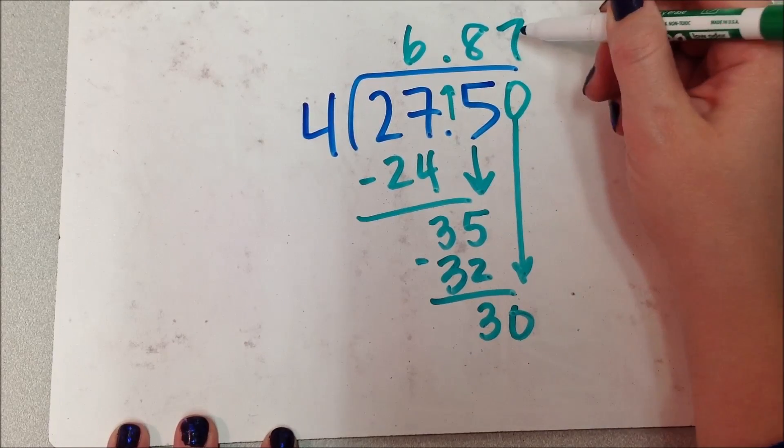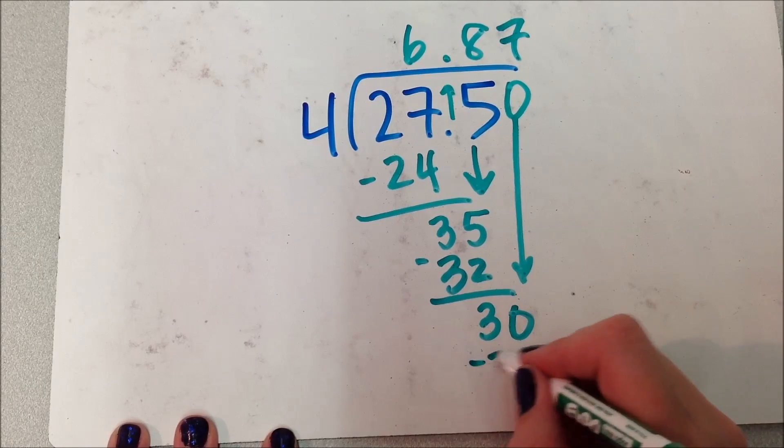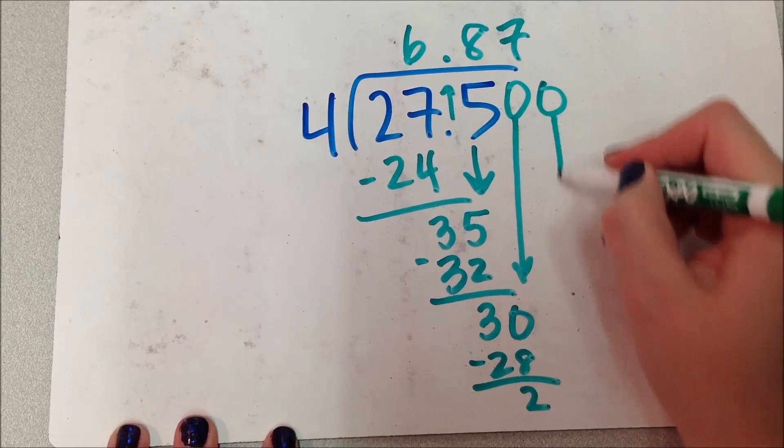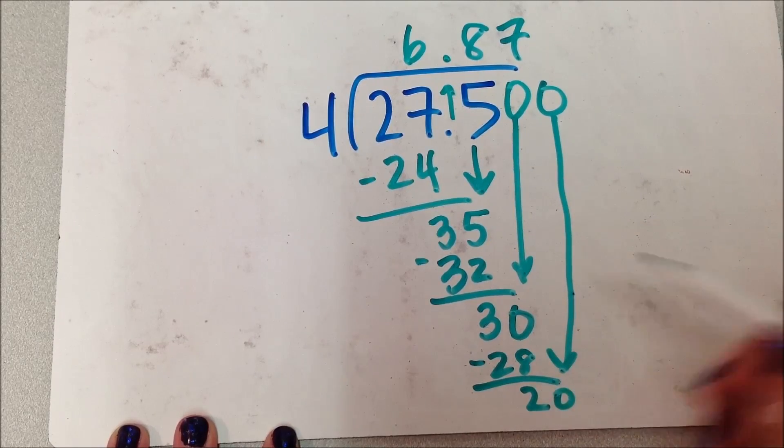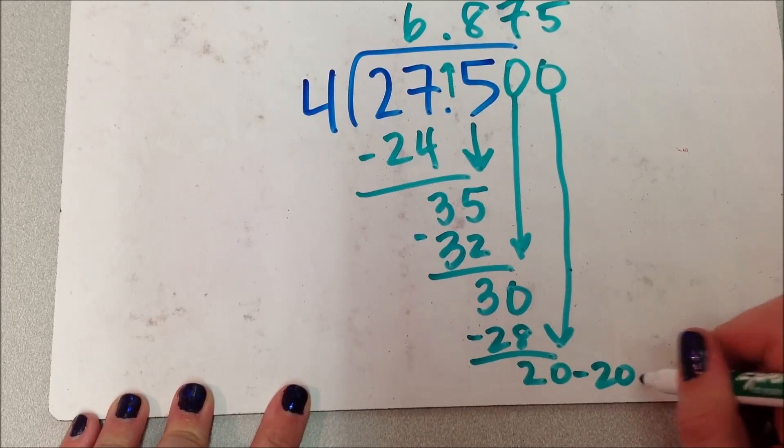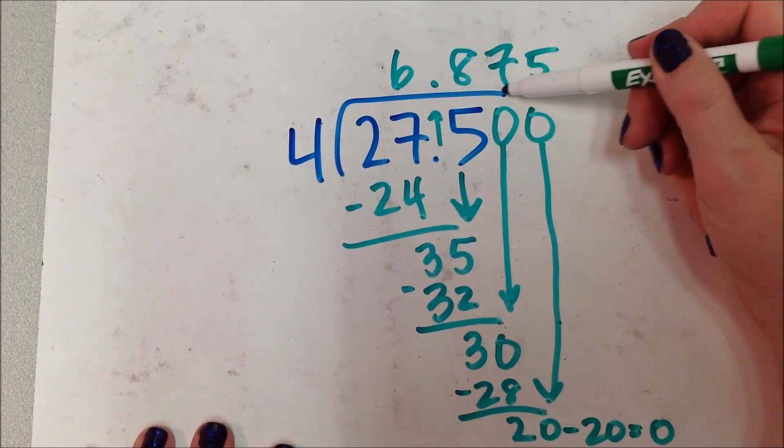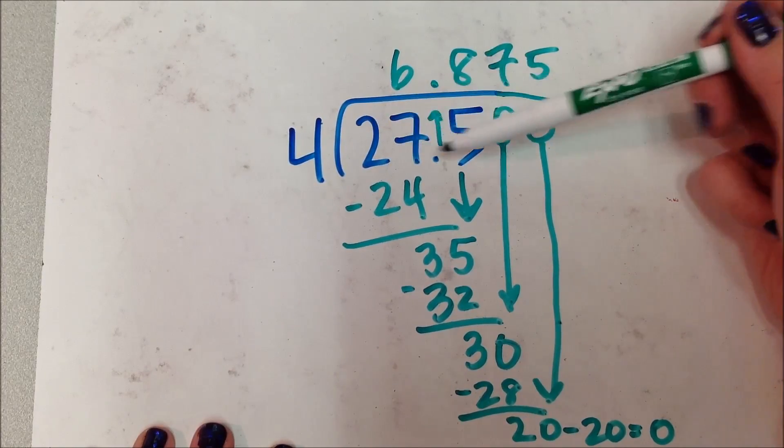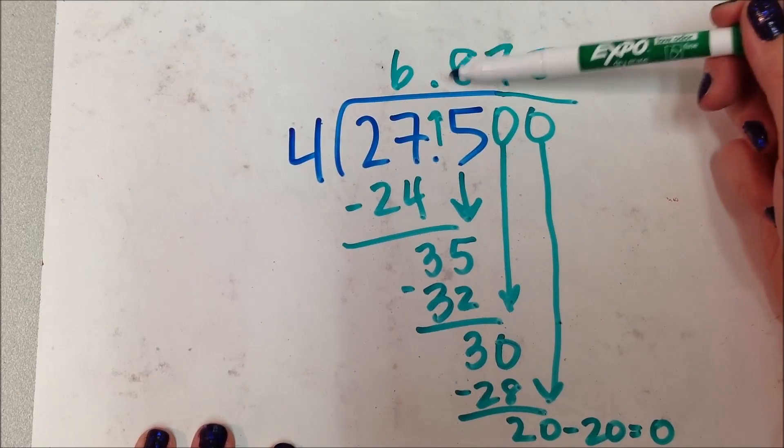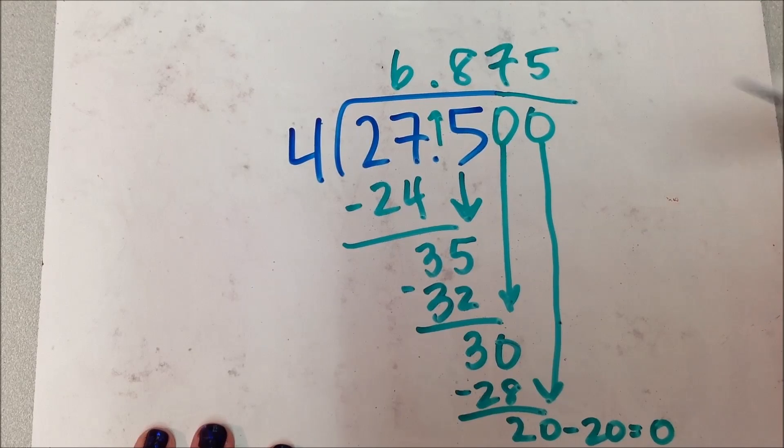7 into 30, oh, I said it. 4 into 30 goes 7. I said it wrong. 28, right? 2 left over. I'm going to add in another 0, drop it down. 4 into 20, ah, look at that. It's going to be 20. I ran out of room again. So, up here, I could say that 27 and a half divided by 4 is 6.875, or 6 and 875 thousandths.